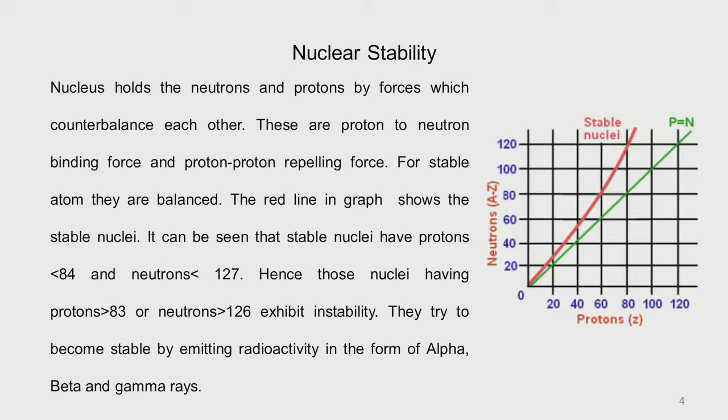One question was about nuclear stability. The nucleus holds neutrons and protons together by forces — attractive forces and repulsive forces. When they balance each other, the nucleus is stable. The forces involved are the proton-to-neutron binding force and the proton-to-proton force, which is a positive-to-positive repelling force. They are balanced for a stable atom.